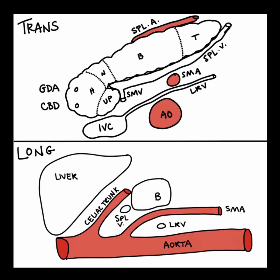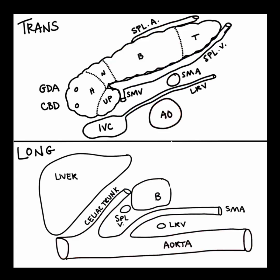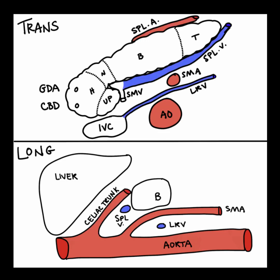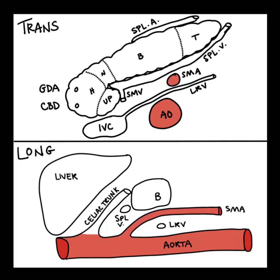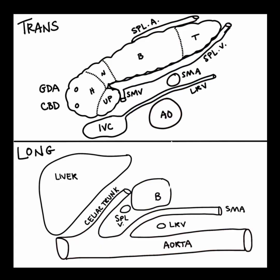The body of the pancreas can be more difficult to see as the stomach can overlie this area. Look for the aorta and the superior mesenteric artery. When the superior mesenteric artery becomes visible anterior to the aorta, the pancreas body should be the next anterior structure. You can also see the body anterior to the elongated aorta, and you'll also see an elongated superior mesenteric artery.